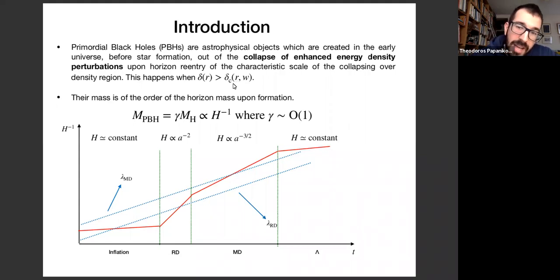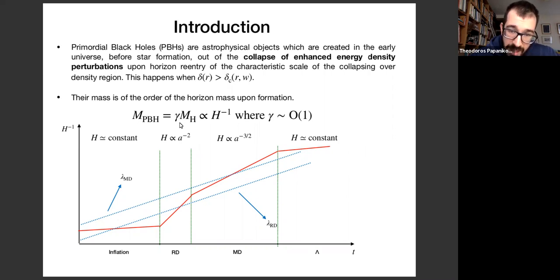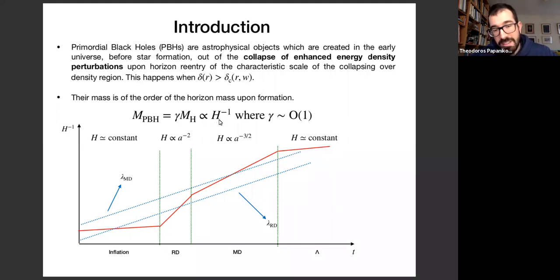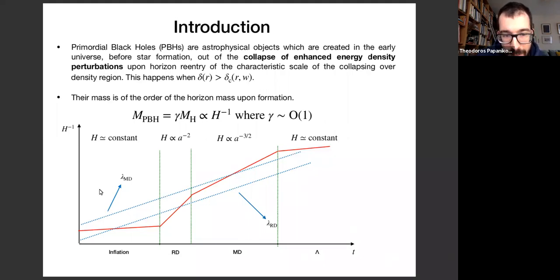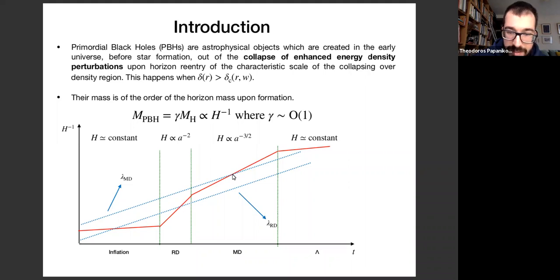Once the black hole collapses, it acquires a mass of the order of the horizon mass at formation time, with a proportionality factor gamma of order one which encapsulates the details of the gravitational collapse. As one can straightforwardly see after a simple calculation, the mass of primordial black holes scales inversely with the Hubble parameter. Given that the Hubble parameter decreases with time, black holes formed earlier in the universe acquire smaller masses. Here in the plot, we show the time evolution of the Hubble scale as a function of time, and with dotted blue lines the time evolution of two characteristic scales entering the horizon in radiation-dominated and matter-dominated eras.